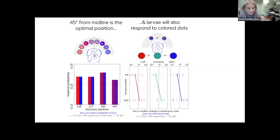It turns out that it's about 45 degrees from the midline. This is nice because it agrees with naturalistic behavioral analyses of prey capture that other groups have done.